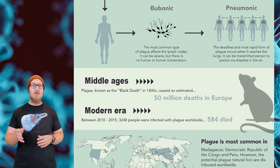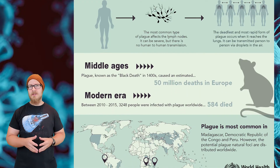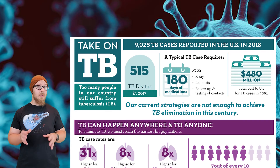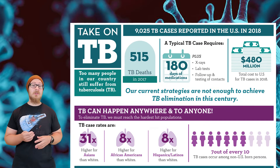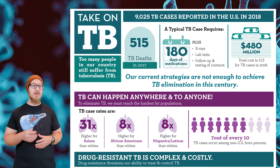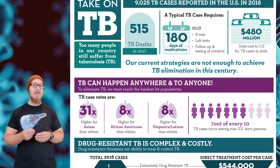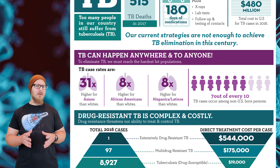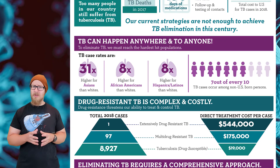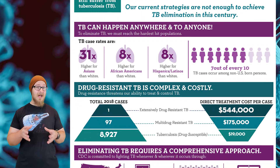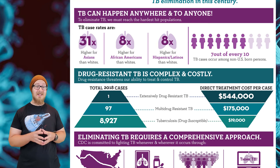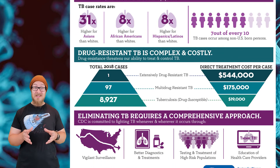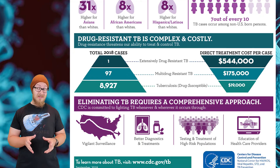Plague is transmitted to humans via the bite of an infected organism or contact with the fluids of someone who is infected. Tuberculosis is a bacterial infection that typically attacks the lungs. It is spread by breathing in the bacteria from the droplets of an infected person. Tuberculosis is one of the diseases we are very worried about right now because there are populations of this bacteria that are totally resistant to our strongest antibiotics.